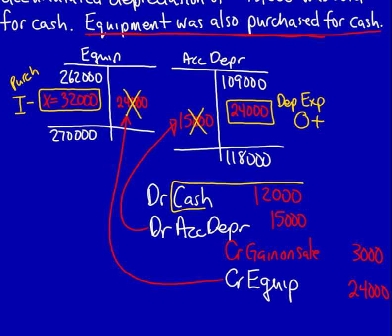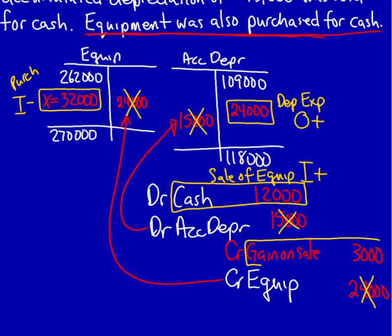Cash — anything having to do with cash must go on the cash flow statement. This is the sale of equipment. Anything having to do with property, plant, and equipment always goes into investing activities, and this is a debit to cash, which is an inflow, so it's a plus. Historical accumulated depreciation and equipment figures are ignored. The gain on sale, however, is sitting on the income statement. We can see from the entry that the gain has nothing to do with cash — the cash impact is already captured. Therefore, we must remove it from the income statement. It's a gain on sale, a credit on the income statement increasing revenues, so we remove it as a negative in operating activities.